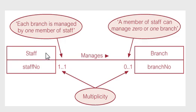Here is an example of an ER diagram with two entities. We have staff and branch, and here we see the relationship is manages. Staff manages branch.